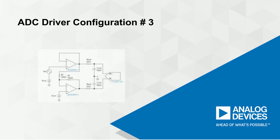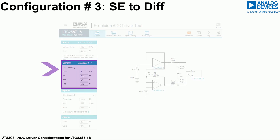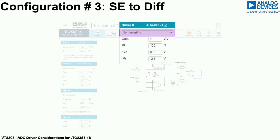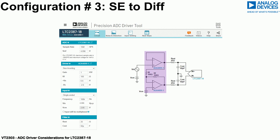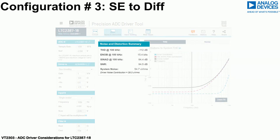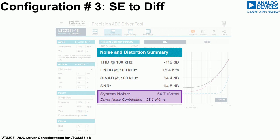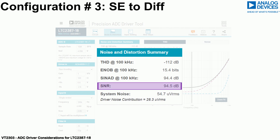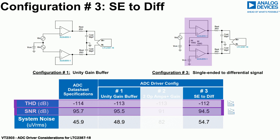The third recommendation is for single-ended to differential signal conversion to take place before the ADC driver input circuit stage. In the ADC driver tool, select the non-inverting configuration with gain set to 1 and single-ended input. The circuit uses two ADA 4899-1 devices to perform the conversion. The distortion for this configuration is minus 112 dB, system noise is 54.7 microvolts RMS, and the SNR is projected to be 94.5 dB — both distortion and SNR reduced by approximately 1 dB compared to recommendation 1.